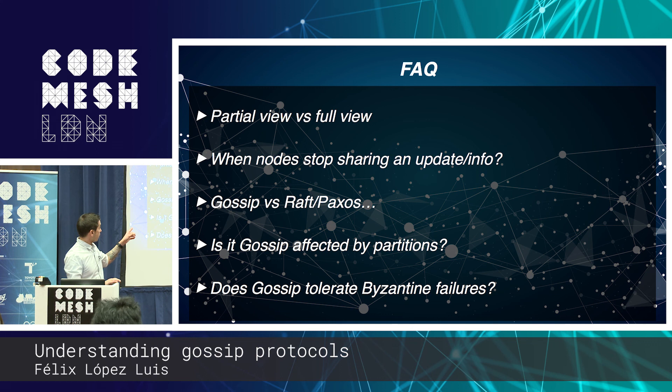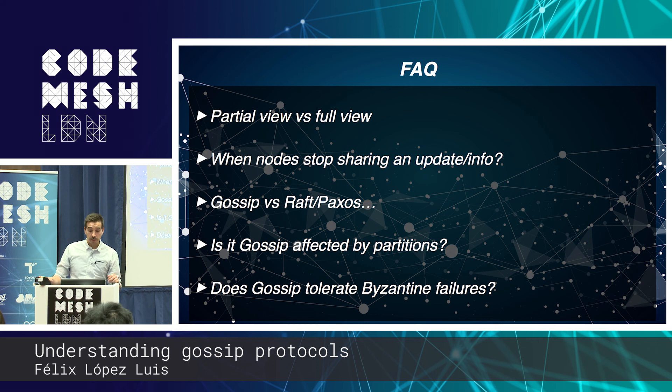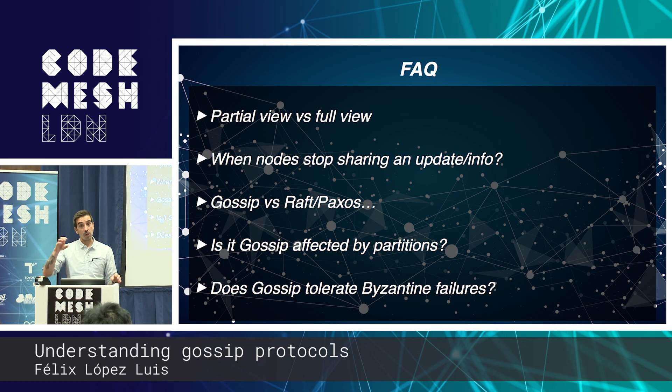Another common question: do nodes keep sending information forever? It depends on the algorithm and implementation. Some use feedback — if a node gossips to 10 nodes and all already have the information, it stops. Others send a fixed number of times, say 10. Others estimate message propagation and stop sending the most-propagated messages. There are many different approaches.